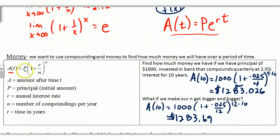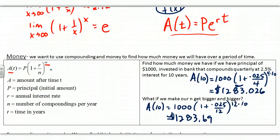A(t) equals the principal P times (1 + r/n)^(nt). If I give you a yearly rate but compound monthly, I take that rate and divide by 12 to get the monthly interest rate. The exponent nt means: if n = 12 and t = 3 years, that's 36 times I apply the interest. The 1 in the formula brings back your original principal — for instance, $1000 is still in the bank plus the additional interest earned.